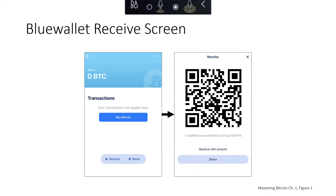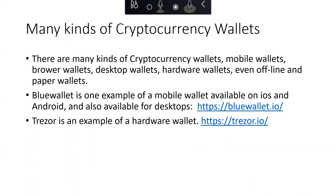If Alice wants Bob to send her some Bitcoin, she shares this QR code with Bob, and then he sends her the Bitcoin currency — presumably in exchange for something else, like $10 in cash. Blue Wallet is just one of many examples of mobile wallets available on iOS and Android. You can learn more at BlueWallet.io. Trezor is an example of a hardware wallet at Trezor.io. It's got a little screen that can display Bitcoin addresses, a couple buttons to control the small screen, and a USB connection to plug into a laptop or desktop computer.